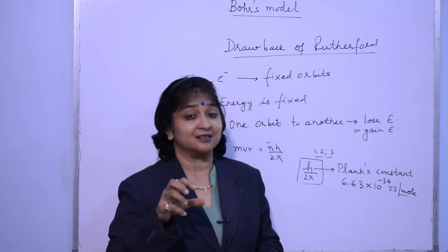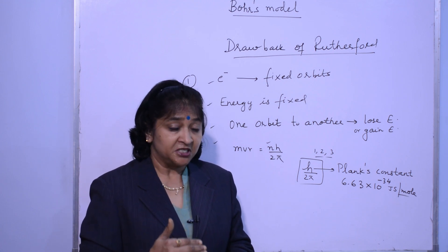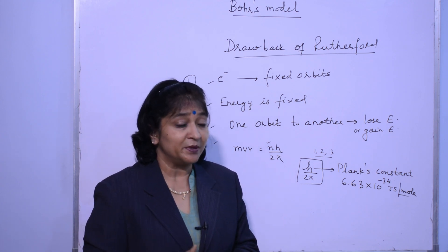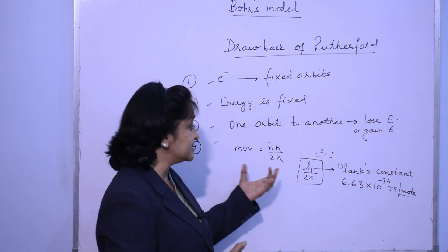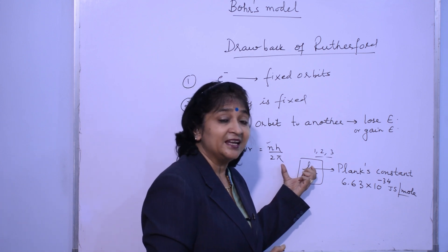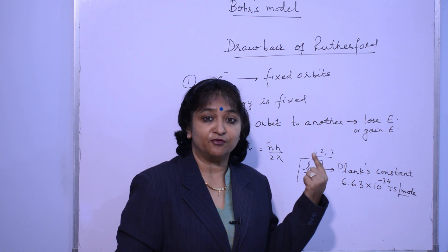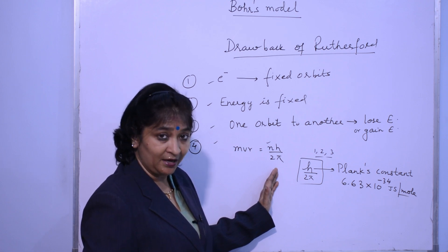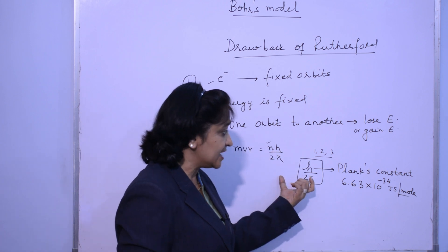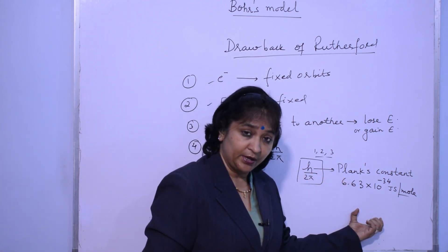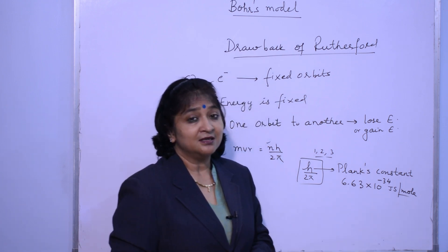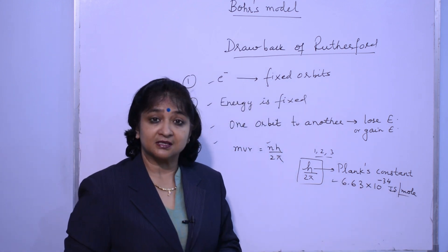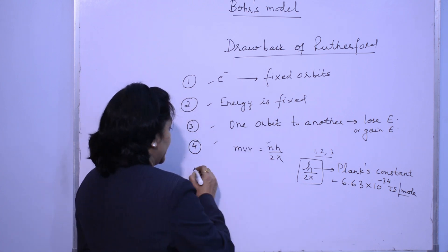The electron will always move in fixed orbits, and so long as it is moving in fixed orbits its energy is also fixed — its energy is quantized. Once the electron jumps from one orbit to another it loses or gains energy, and only those orbits are permissible where its angular momentum is in integral multiples of nh/2π. The value of n and h — where h is Planck's constant with a value of 6.63 × 10⁻³⁴ joules second per mol — and details about its unit we will discuss in Planck's theory.